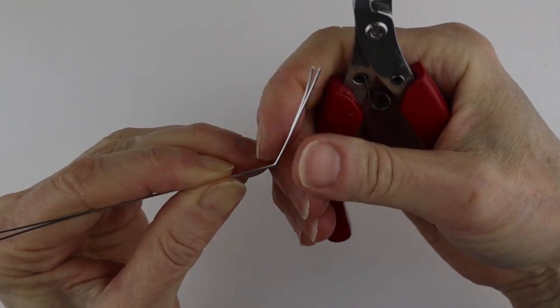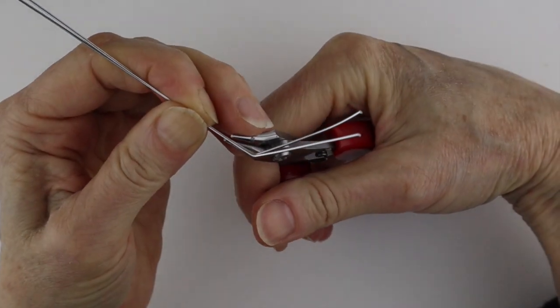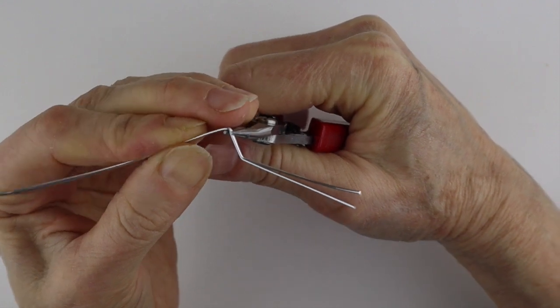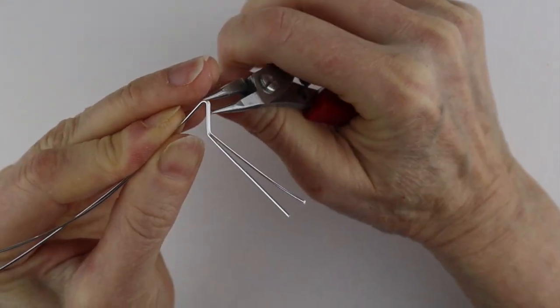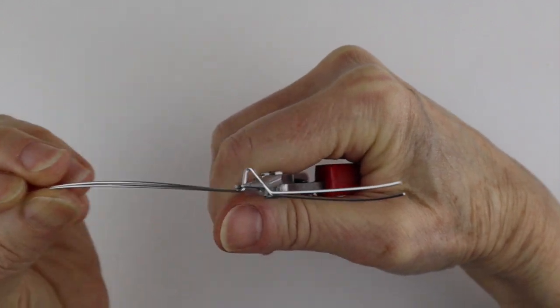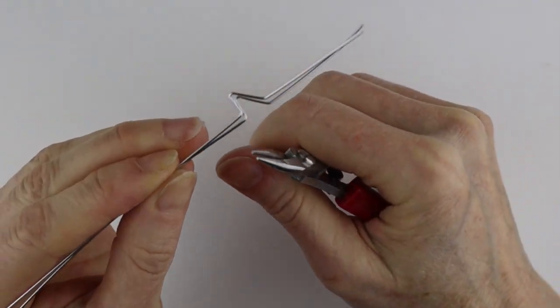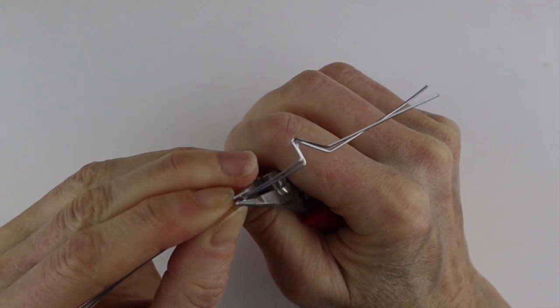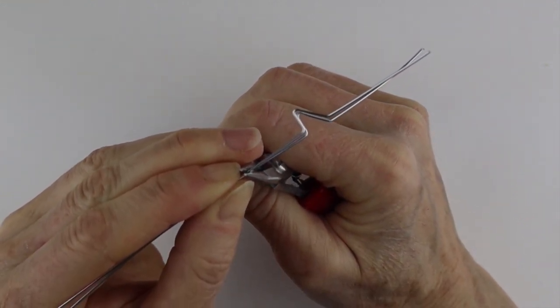This little bit at the top is going to be where you form your loops, so leave about an inch to inch and a half there. Then we want to bend this—this is going to be the head of the fish. We're going to bend this down so that if you have this basic starting point done, your fish bones are going to be the same height. So about an inch, a little more than an inch down.